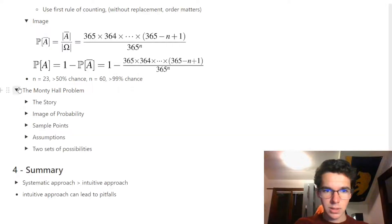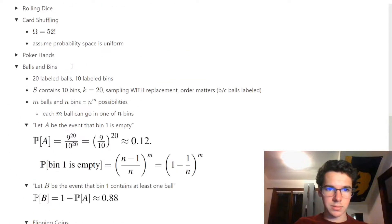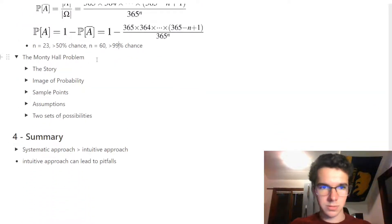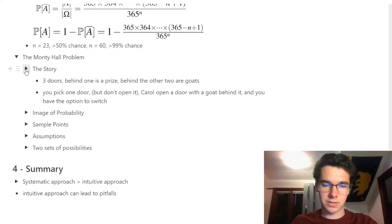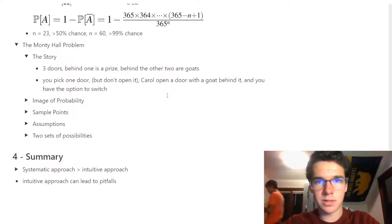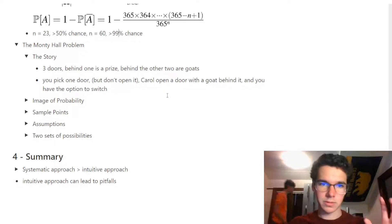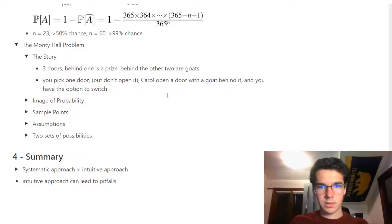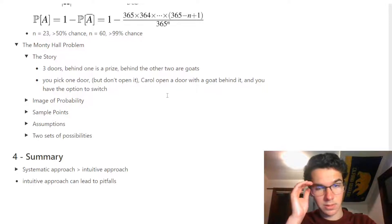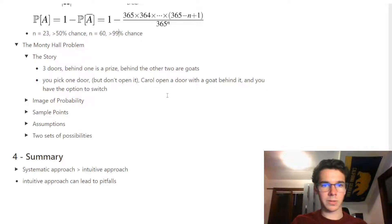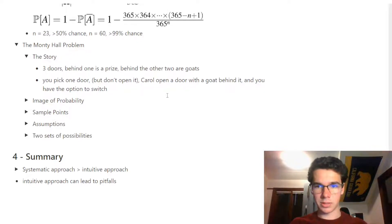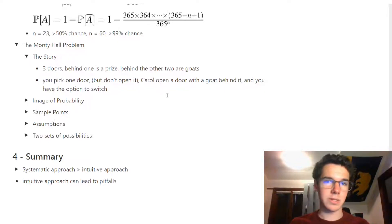The last example is the Monty Hall problem. You're a game show contestant with three doors: behind one is a prize and behind the other two are goats. You pick a door but don't open it. Then the host opens a door with a goat behind it, and you have the option to switch. We want to determine whether it is more beneficial to switch or to stay.